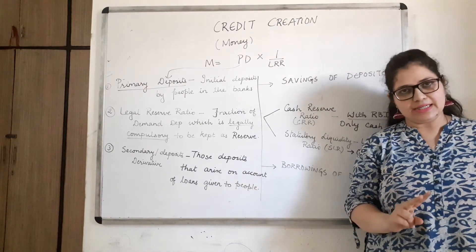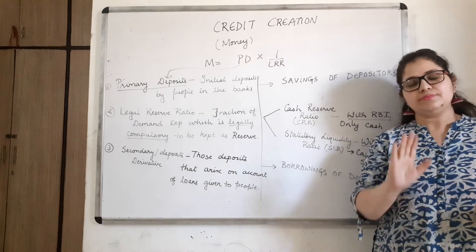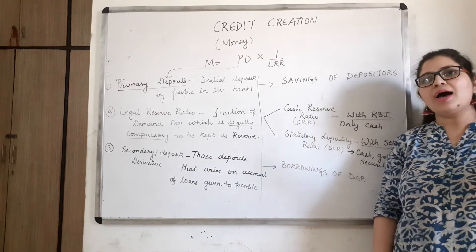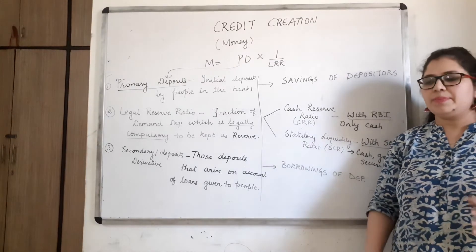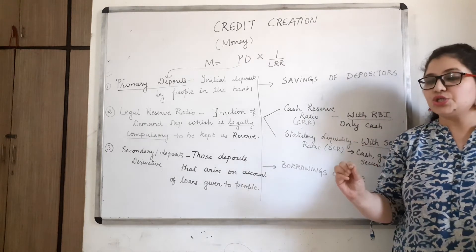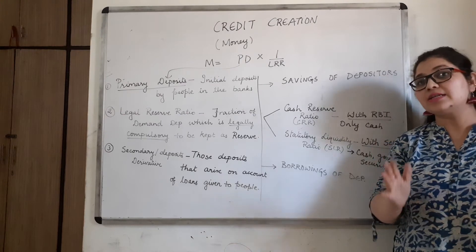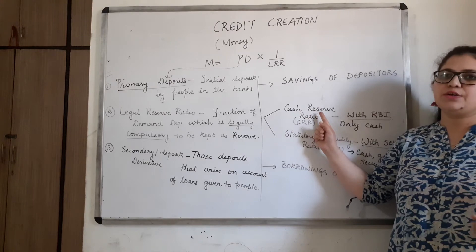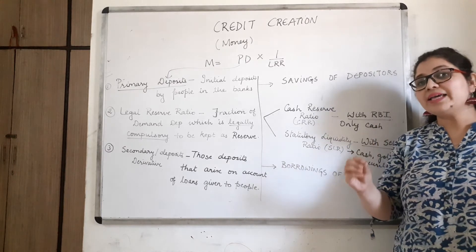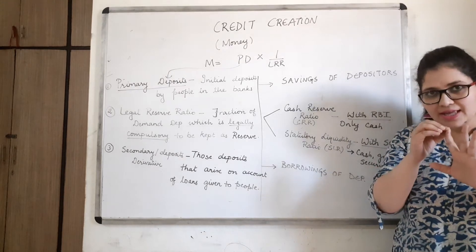CRR is the fraction of deposits that every bank has to keep with the RBI in the form of cash. For example, if a bank has primary deposits of 10 lakh and the CRR percentage is 4%, then 4% of 10 lakh has to be kept with RBI as reserve cash. So to repeat: CRR is the percentage of primary deposits that a bank is supposed to keep with the RBI in cash form.